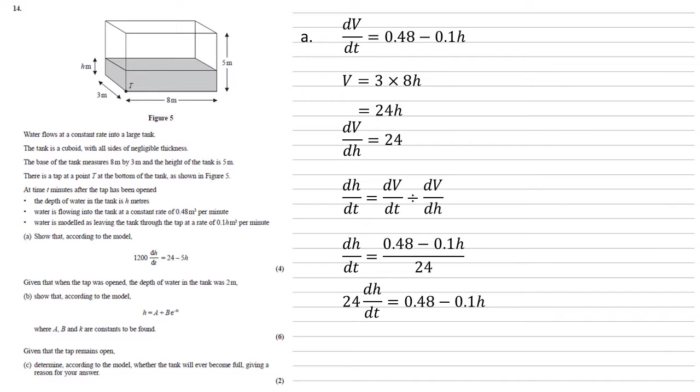But let's just look at those numbers. Instead of 24, we need 1,200. So if we multiply everything through by 50, we get 1,200 dh by dt is equal to 24 minus 5h as required.